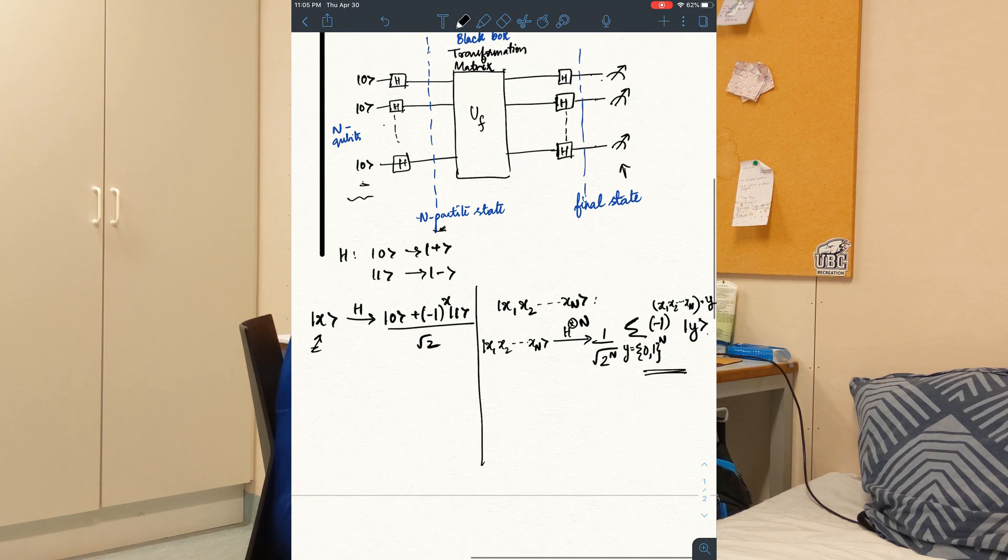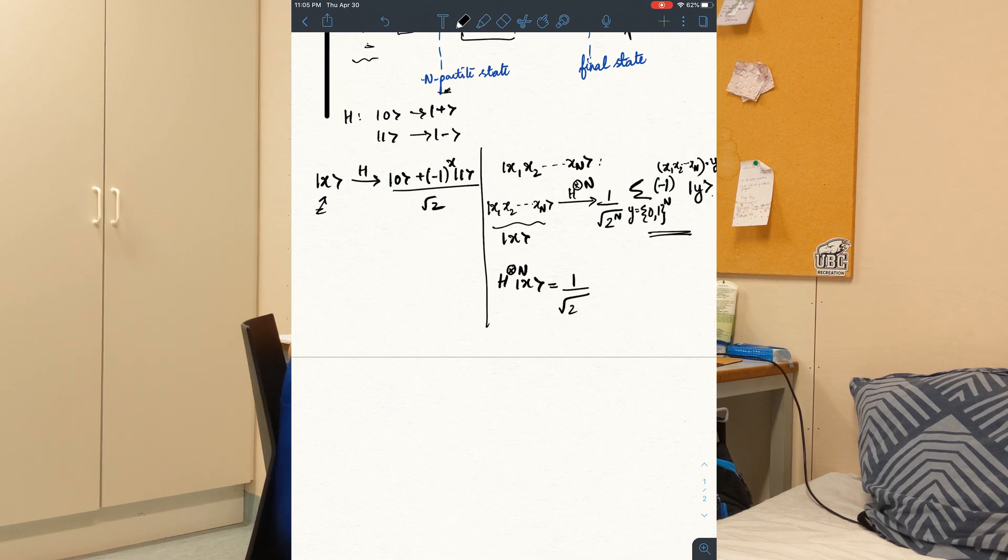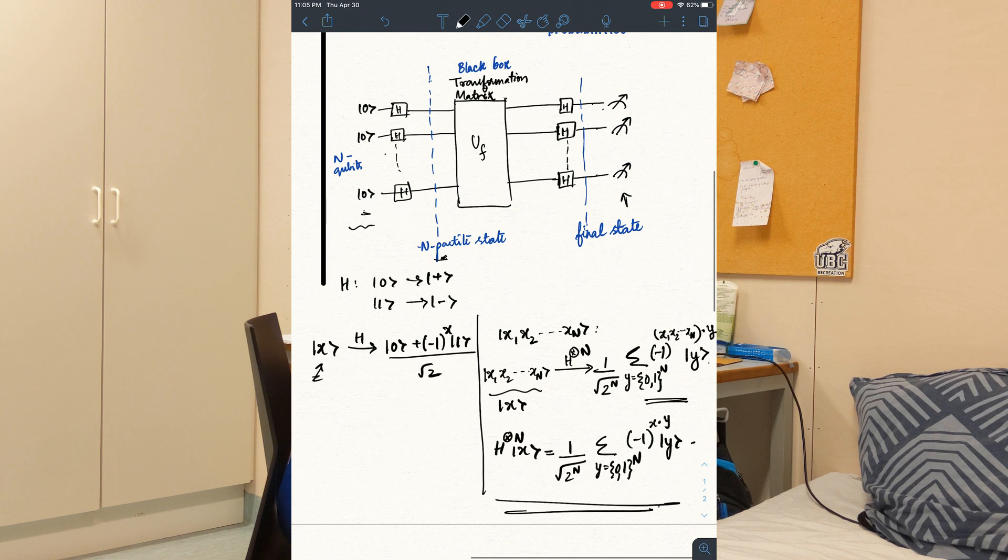So let's apply the transformation matrix of the black box. This, in short, could be written like this. Okay. Now this is the input state that we have, that we're sending over here.